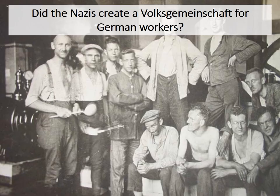So, going back to the question: did the Nazis create a Volksgemeinschaft for the German workers? On the surface, things look good — they reduced unemployment, offered cheaper holidays, provided better facilities, and had a scheme to buy a car. But dig under the surface, and that Volksgemeinschaft was a fraud. Unemployment did reduce, but wages meant people still really struggled to support their families. Strength Through Joy activities involved massive political indoctrination, as did the Reich's Labour Service, and the Volkswagen scheme was a complete sham. Did the Nazis create a Volksgemeinschaft for the German workers? In my opinion, no.